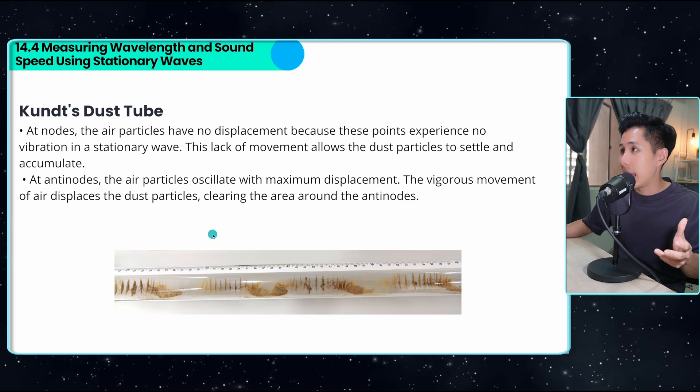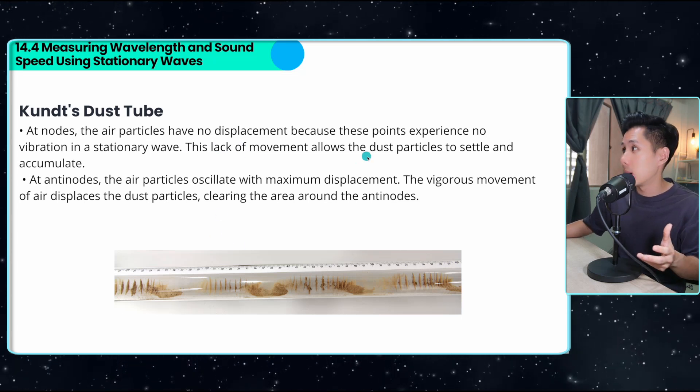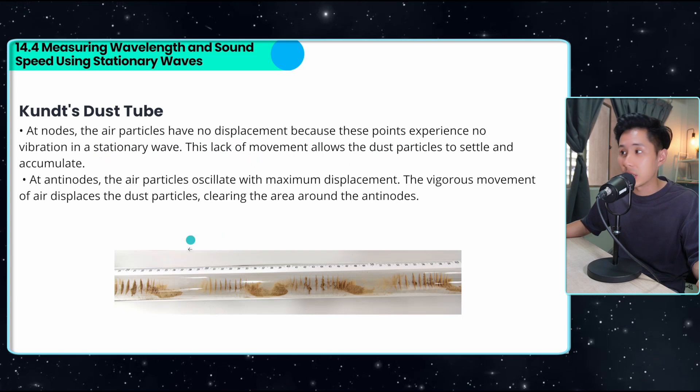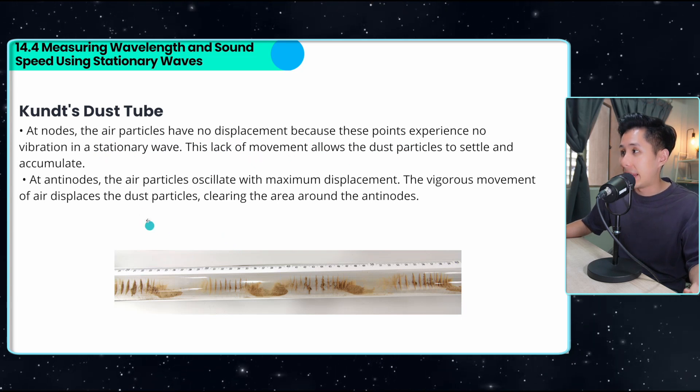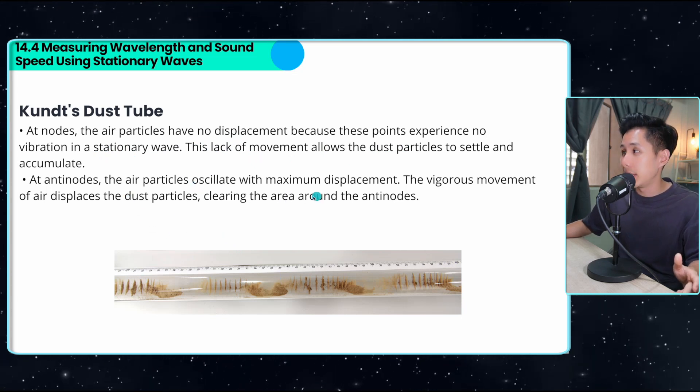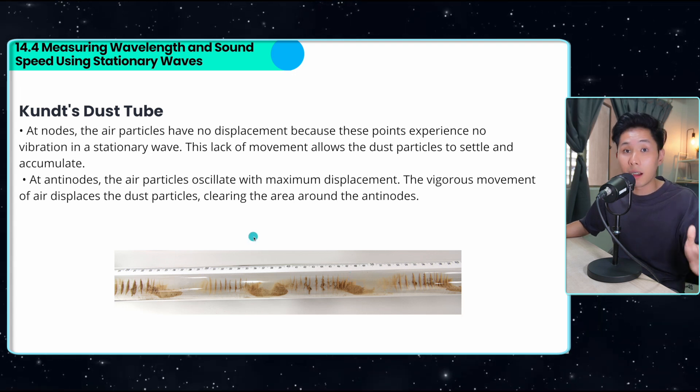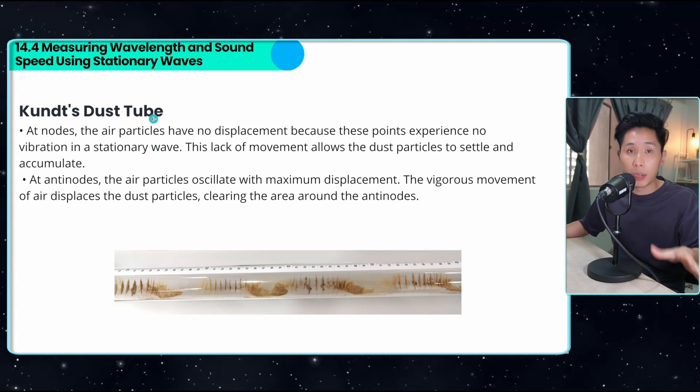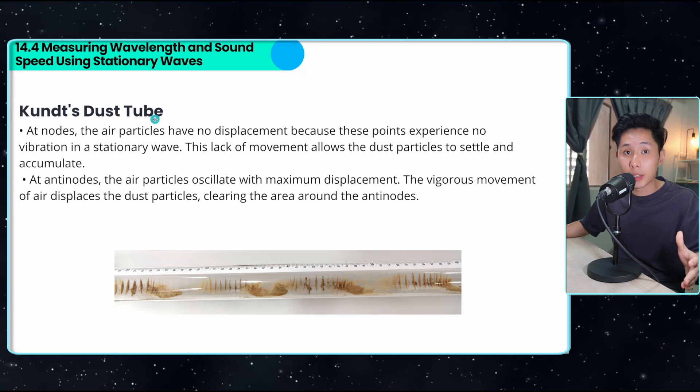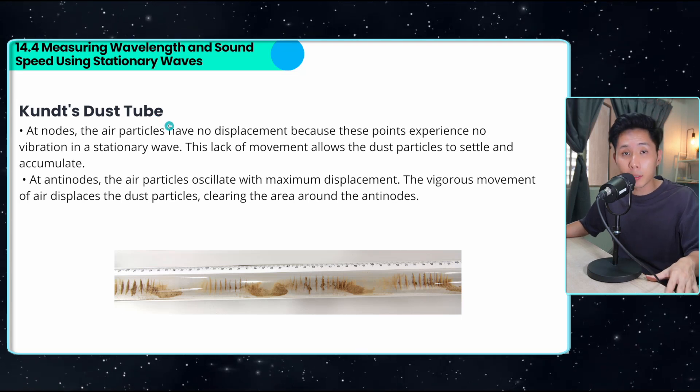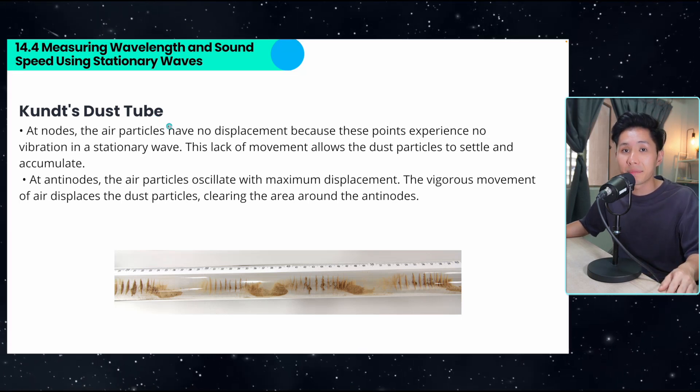And at nodes, the air particles have no displacement because these points experience no vibration. That's what you can see here. And at antinodes, the air particles oscillate with maximum displacement. And this is how scientists use this Kundt dust tube to measure the wavelength and the sound speed using stationary wave. And that's the end of this video. Thank you so much for watching. I shall see you in the next video. Goodbye.